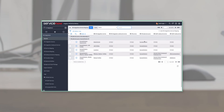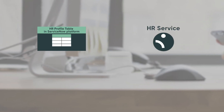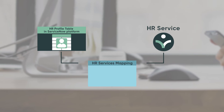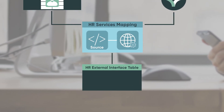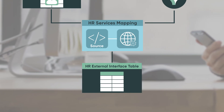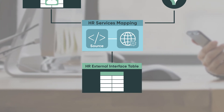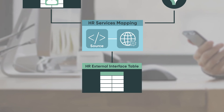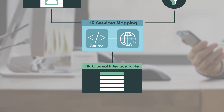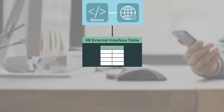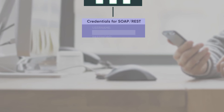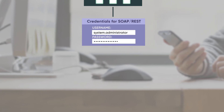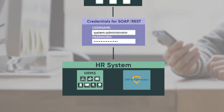A schedule or event triggered in the ServiceNow platform starts the process of pushing data from the HR table or HR service. The HR web services transfer the data to the HR external interface, which is another table in the ServiceNow platform. The HR service mapping configuration binds the source and web services. The HR outbound schema mapping maps the data from the source tables to the fields in the target system, credentials provide access, and the data is incorporated into that system.